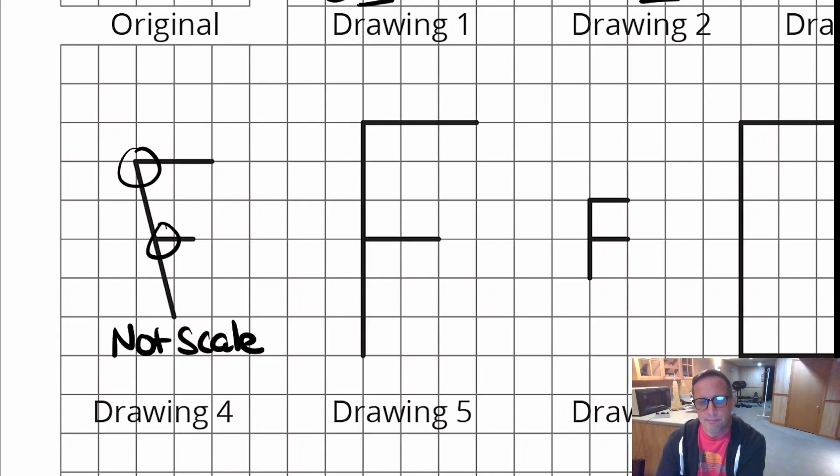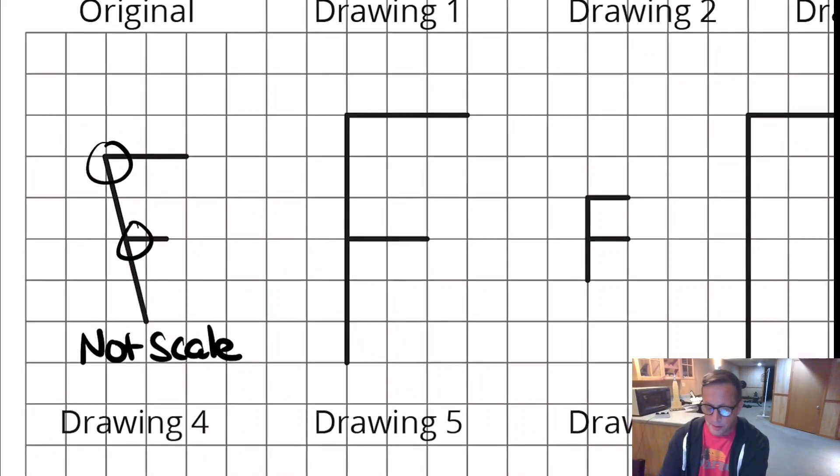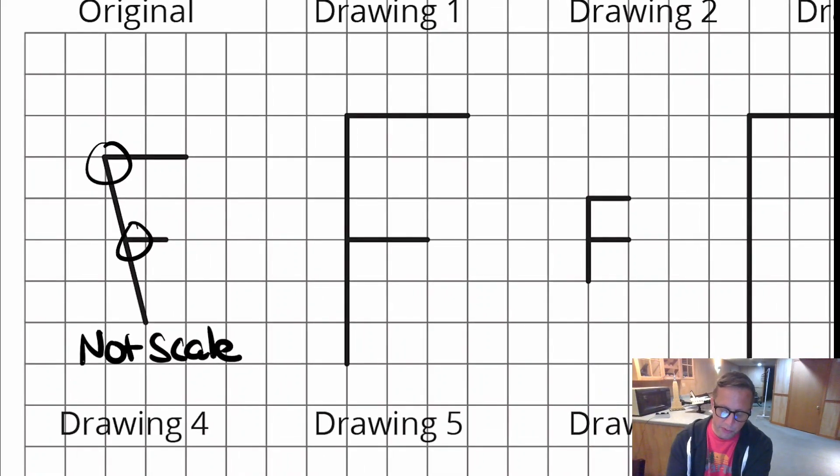Drawing five, just looking at it, it looks like it's scale. But if we look at these parts right here, this top part and the middle part right there, those do not have a two to one relationship. The top right there is three, and that's two. So that is not to scale.